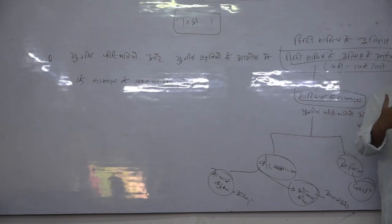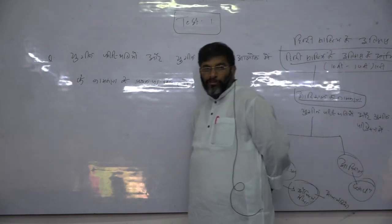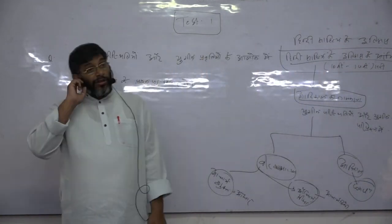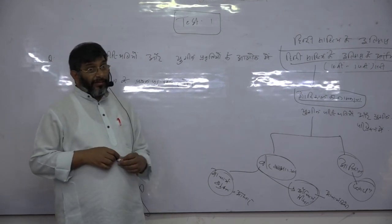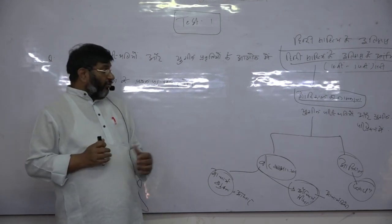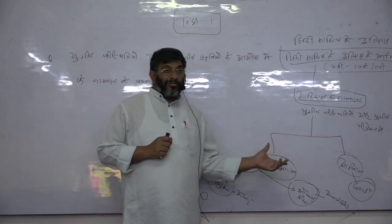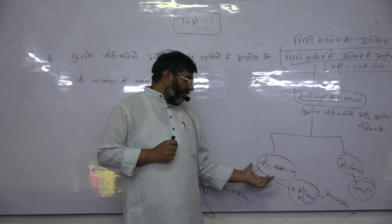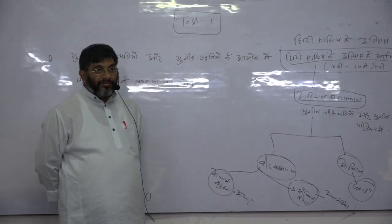Yahan bahut vis-taas mein jaane ki zaroorat nahi. Adhik se adhik passing reference jo hai, hum yeh de sakte hain ki iske kai naam sujhaye gaye hain, amuk amuk amuk. Lekin agar yugin parishthitiyon aur yugin privirhtiyon ke context mein baat karen, to kahin na kahin do naam hain jahan par charcha seemit hoti dikhayi padti hai - Veergathakal aur Adhikaal. Nahi?